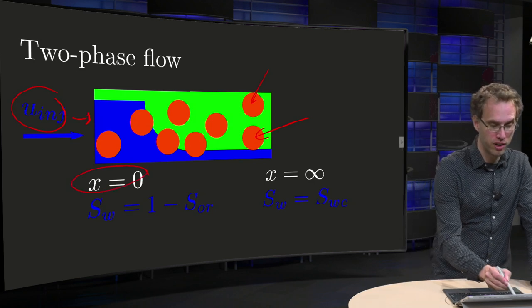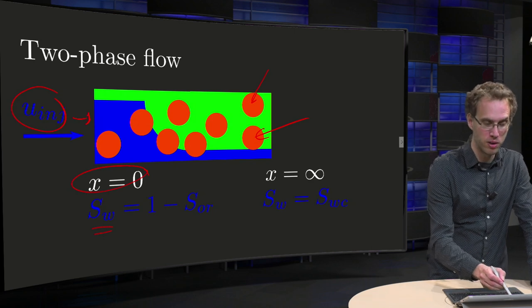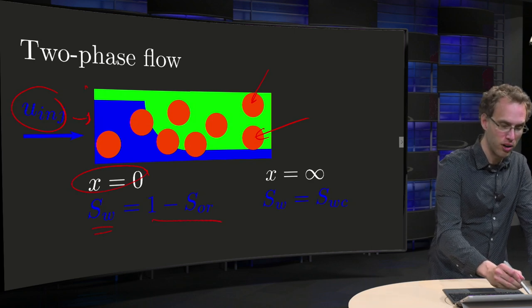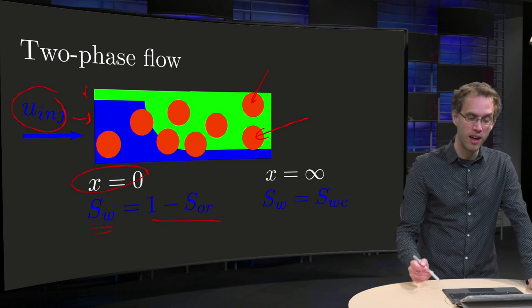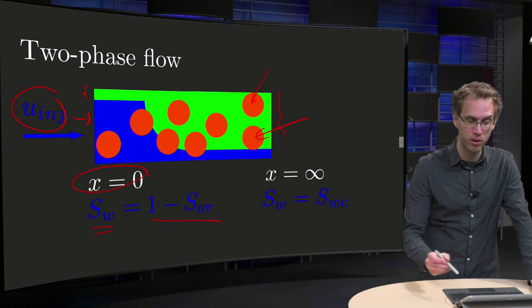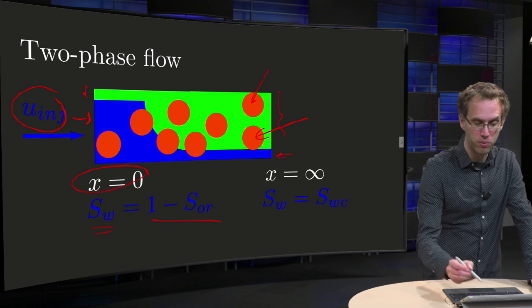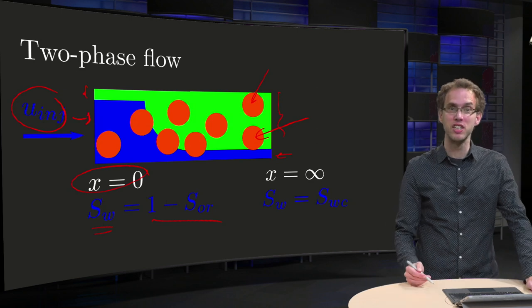At x equals zero we are injecting, so your water saturation will be 1 minus s_or. We always have some residual oil saturation s_or. Very far away we are completely filled with oil, apart from water which is always there at connate water saturation. That's the setup.